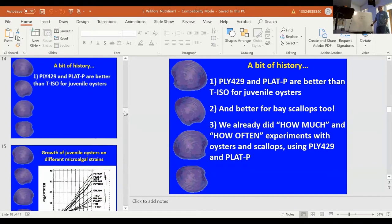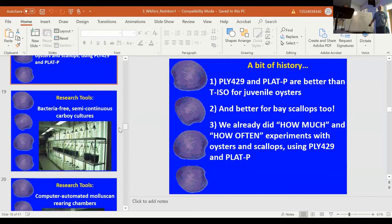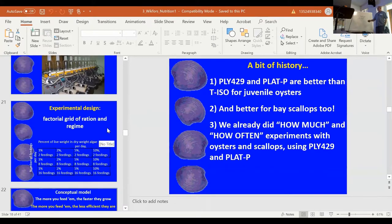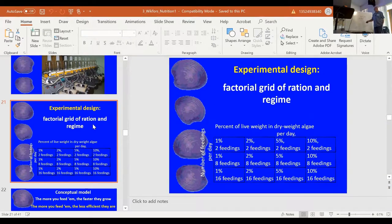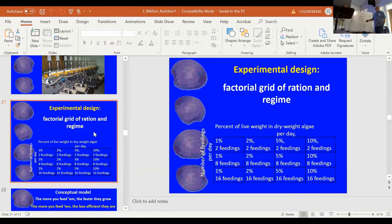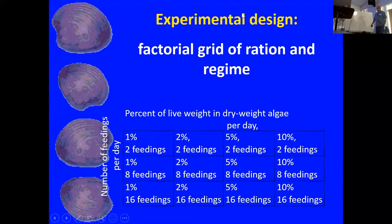Here's the same experimental design I showed you before for oysters and bay scallops, where both the amount and the number of feedings varied experimentally. You may recall this is what we expected to see, and what we did see in oysters and bay scallops. The units we used were the same as I described already.